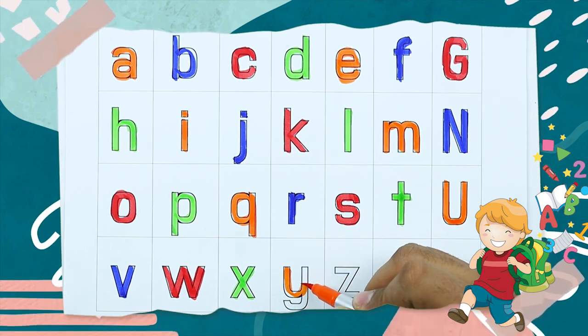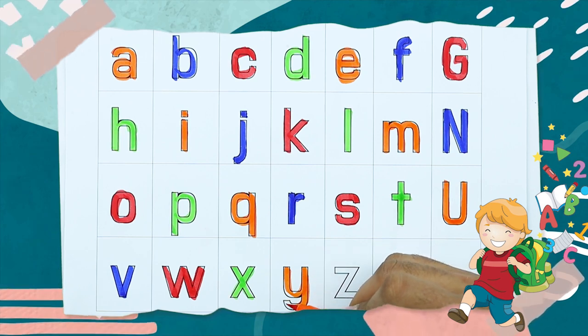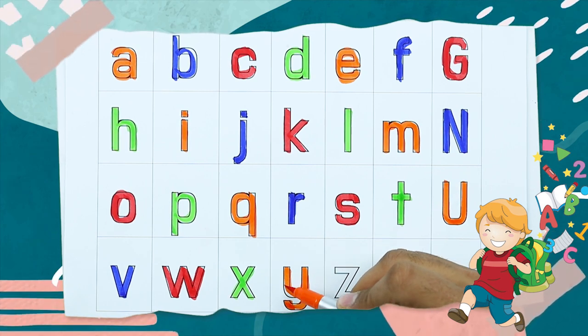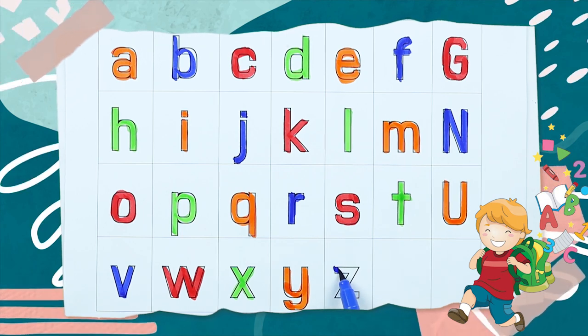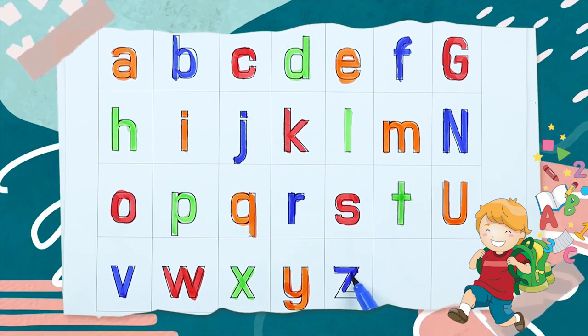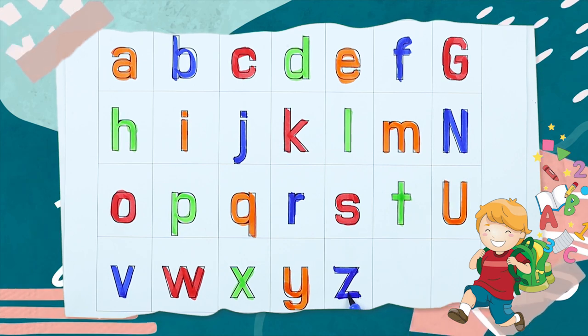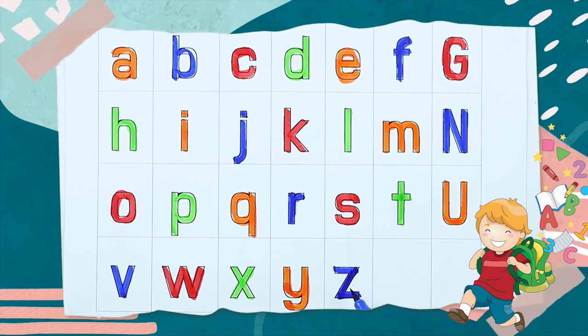Y, Y, Y for yak, it's small y with orange color. Z, Z for zebra, it's small z with blue color, Z for zebra.